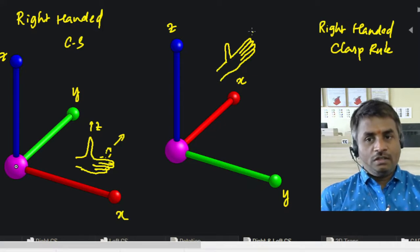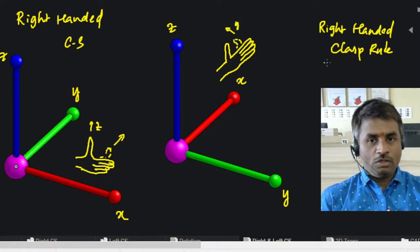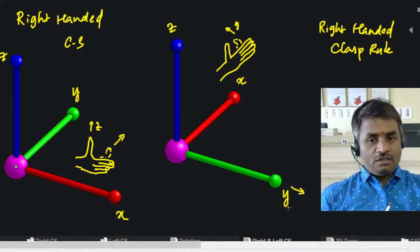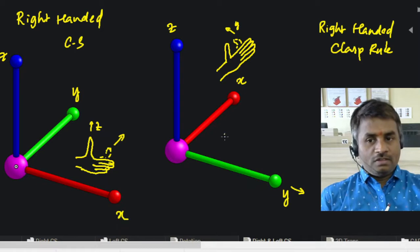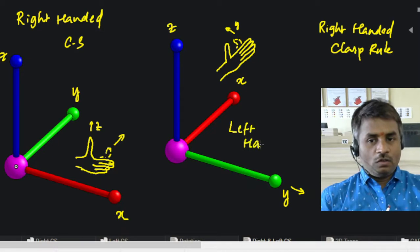This is our right hand. Fingers will be folding away from the screen, and this will be the predicted direction of the y-axis according to the right-hand rule. But since the y-direction is opposite to what's predicted, this is not a right-handed coordinate system—it is a left-handed coordinate system.